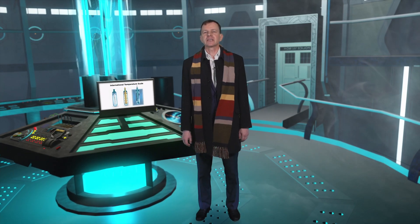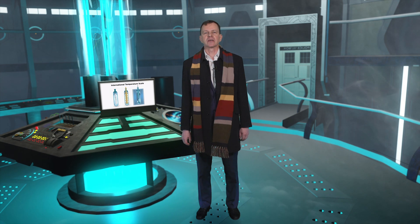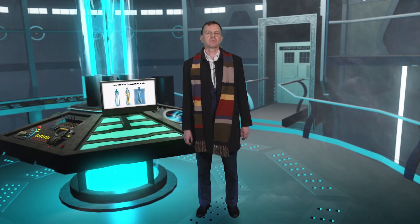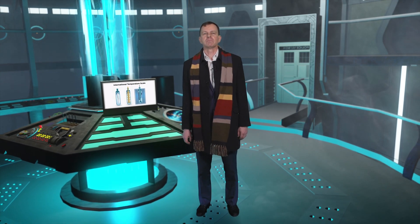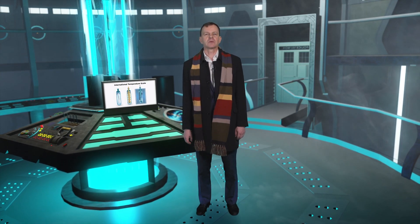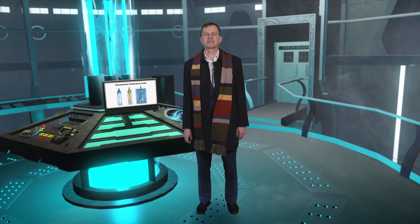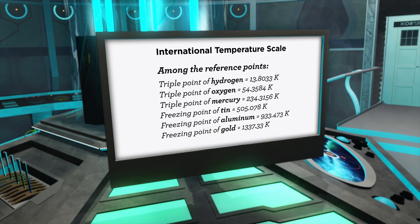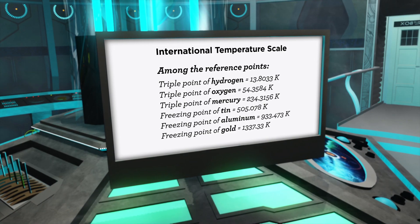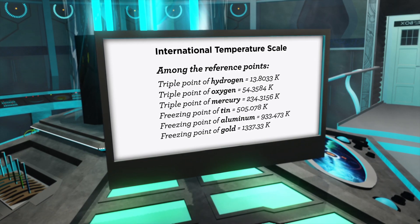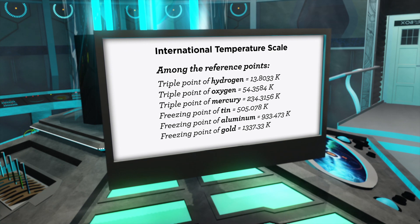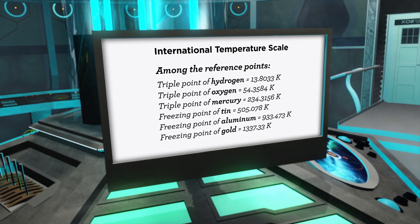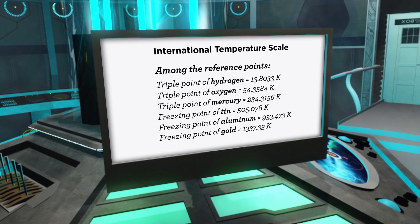Today the International Temperature Scale is based on defined temperatures for the melting and freezing points of a set of pure materials, covering 14 to 1400 Kelvin, or minus 260 to 1100 degrees Celsius.